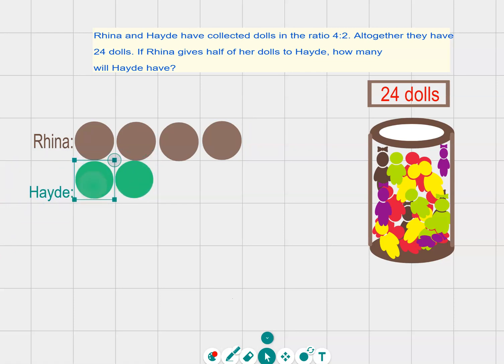But how many dolls does each counter represent? We have 24 dolls in total. So 24 divided by 6 counters. So each counter represents 4 dolls each.